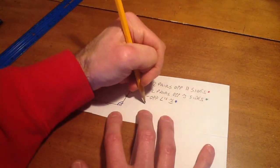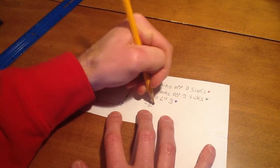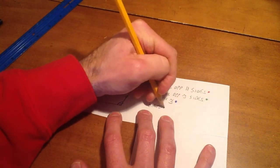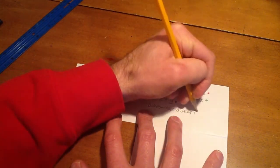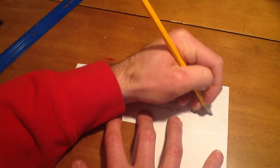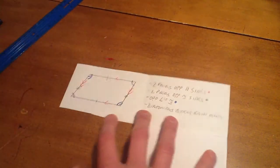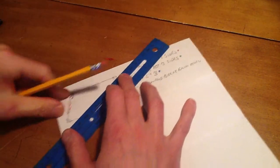Next property. Diagonals bisect each other. So I'm going to take my straight edge and first draw the diagonals.